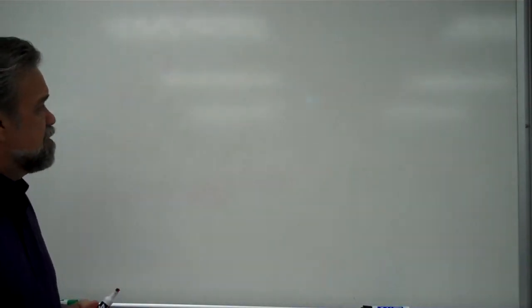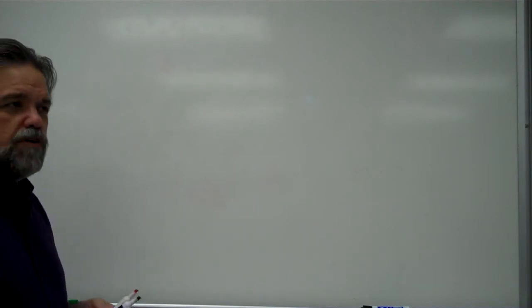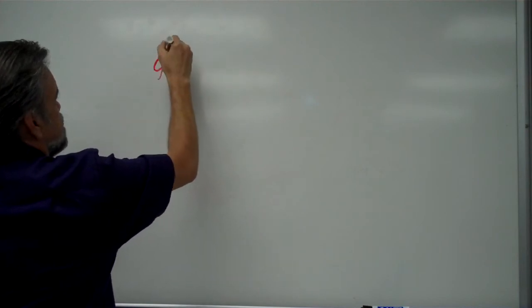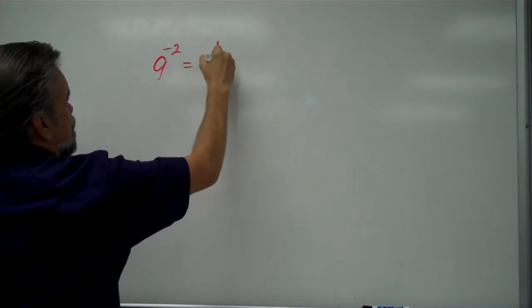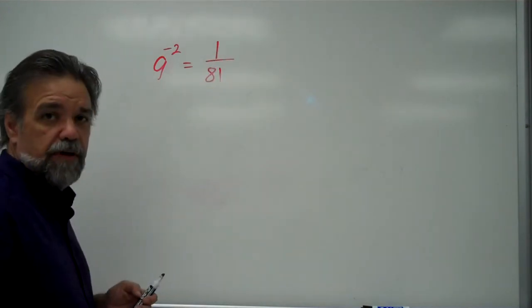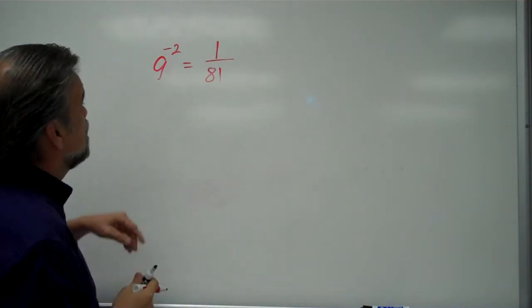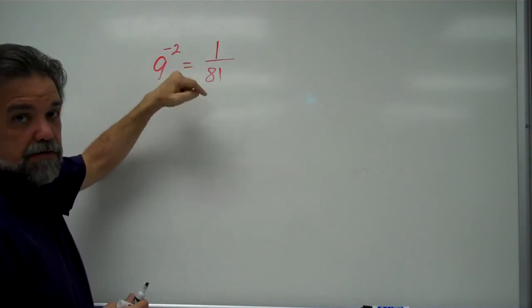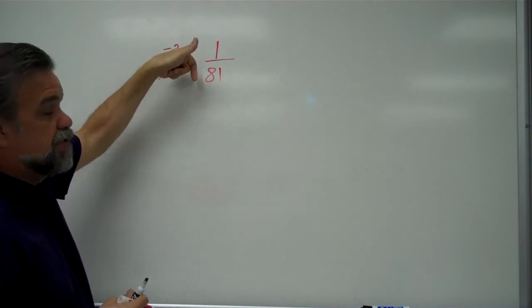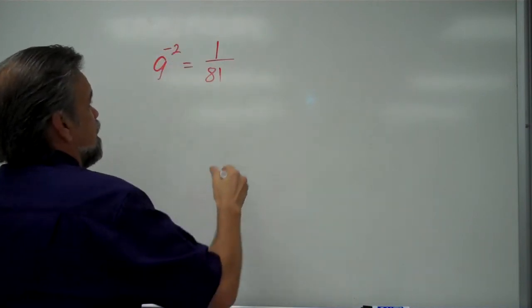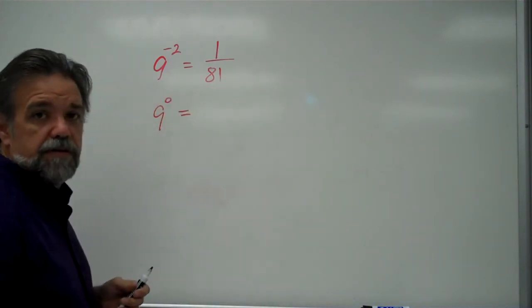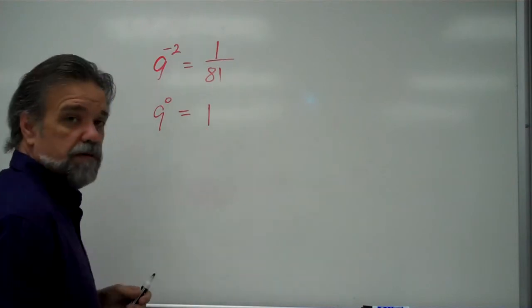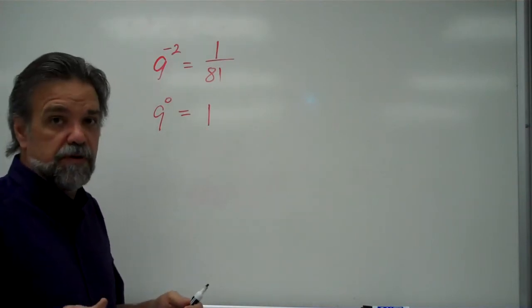Okay, so we looked at negative exponents, like 9 to the negative 2 is 1 over 81, right? Because a negative exponent does not mean your answer is negative. Your negative exponent means reciprocal. And we also learned that 9 to the 0 power is 1, because anything to the 0 power is 1, with the exception of 0.